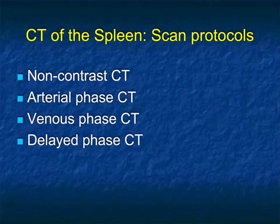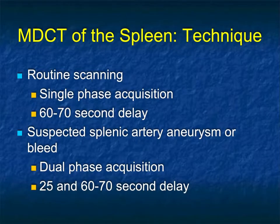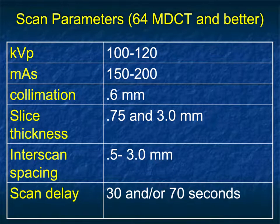We talk about the various appearances of the spleen and the value of different imaging types. We don't typically do multi-phase imaging — we can do dual phase, but not non-contrast or delayed phase routinely. Most cases when you see the spleen, it's a routine abdominal or chest CT in venous phase. If looking for a bleed, aneurysm, pseudoaneurysm, or to better define a mass, I'll do dual phase acquisition at approximately 30 seconds and 70-second delay, using thin section CT at 0.75mm sections every 0.5mm.